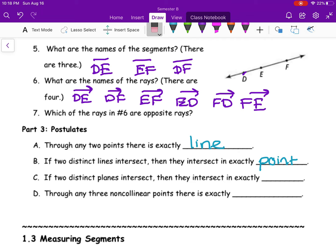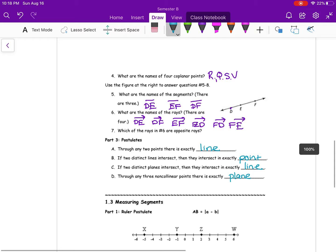For part C, if two distinct planes intersect, so if I have two pieces of paper coming together, they're going to form a line. And then through three non-colinear points, there's exactly one plane.